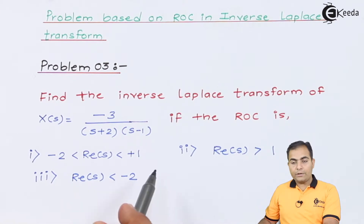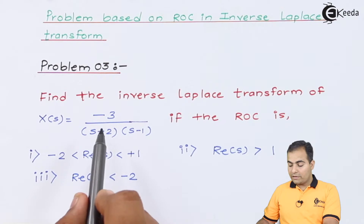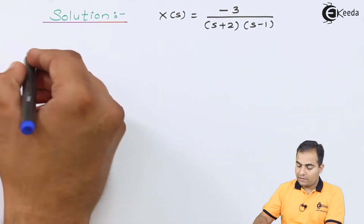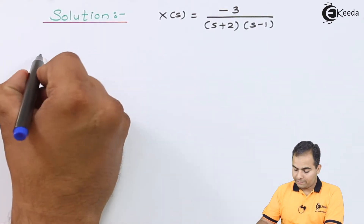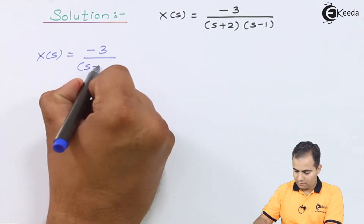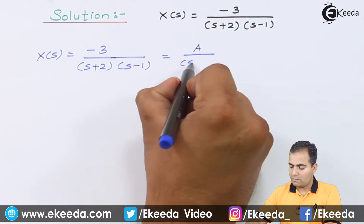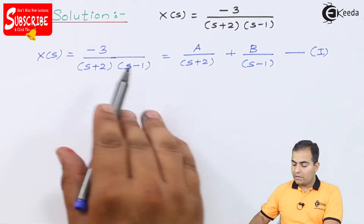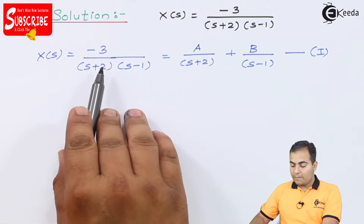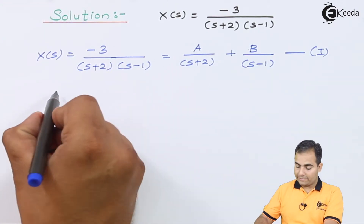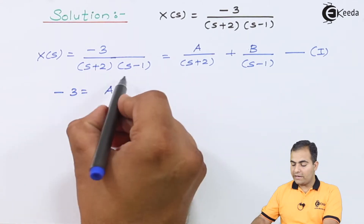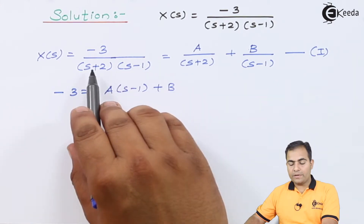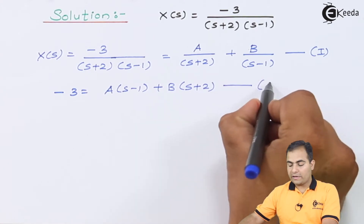Before finding the inverse Laplace transform using the ROC, we first find the values of all the partial fraction factors. We have two poles, so we choose two variables A and D — this is equation number 1. Cross-multiplying, (s+2) cancels giving A multiplied by (s-1), and (s-1) cancels giving D multiplied by (s+2). This is equation number 2.